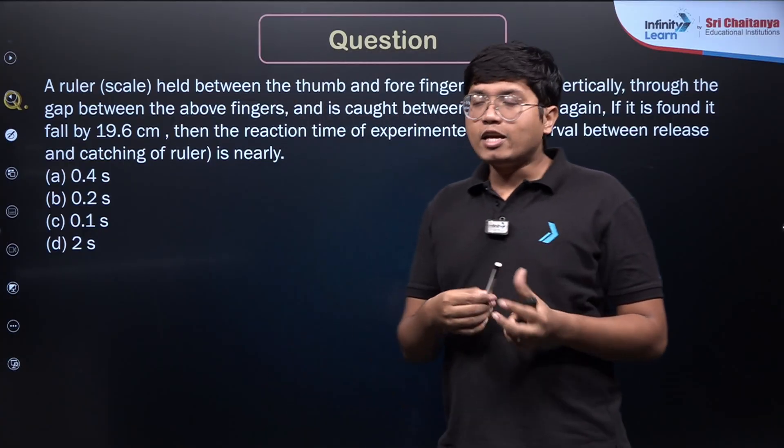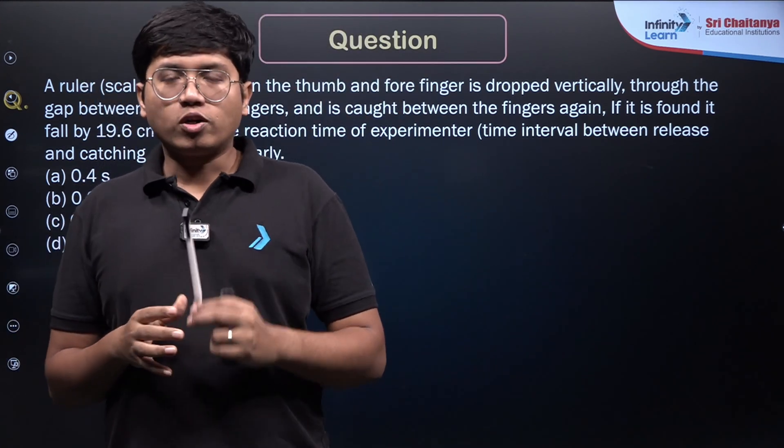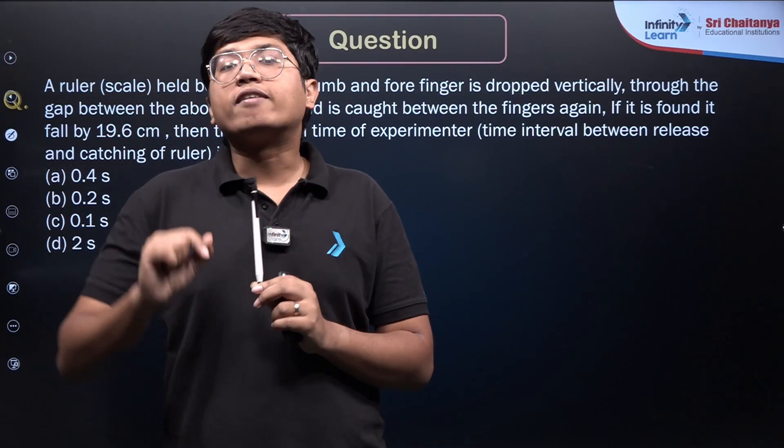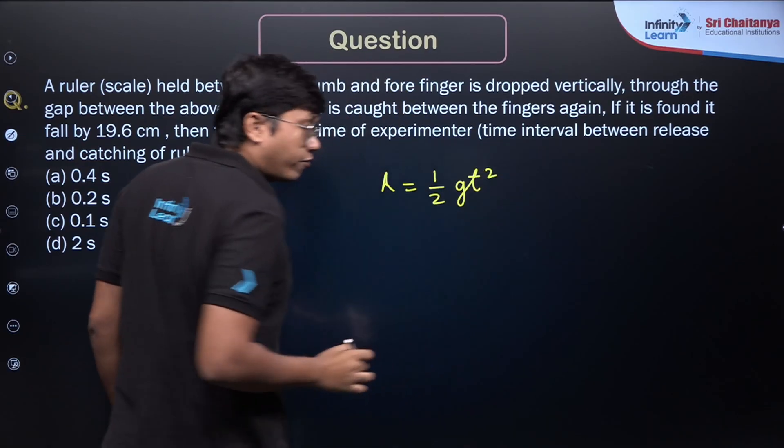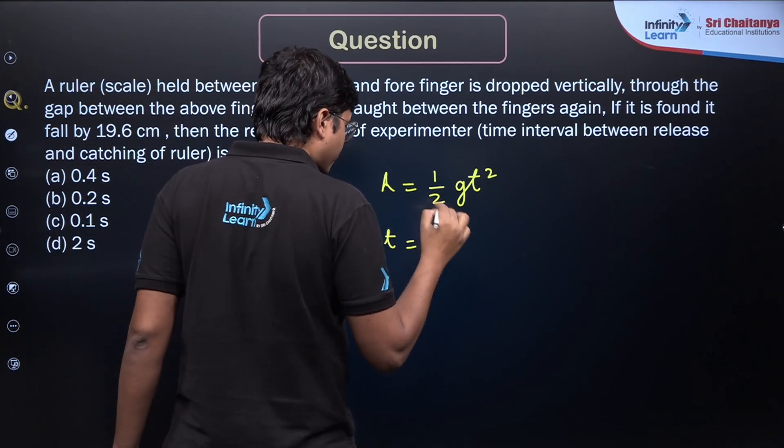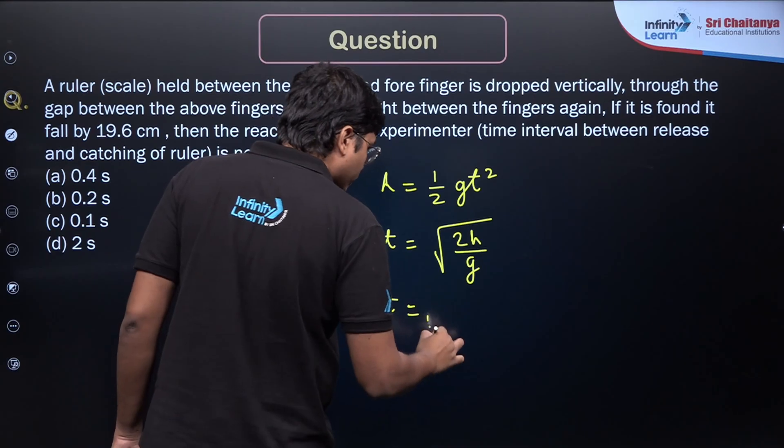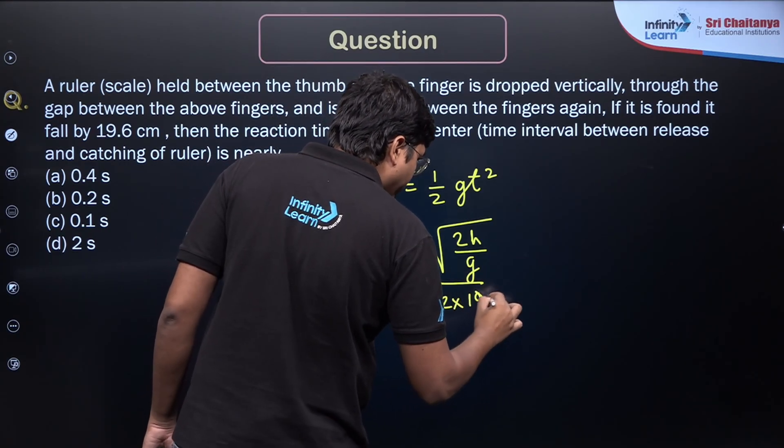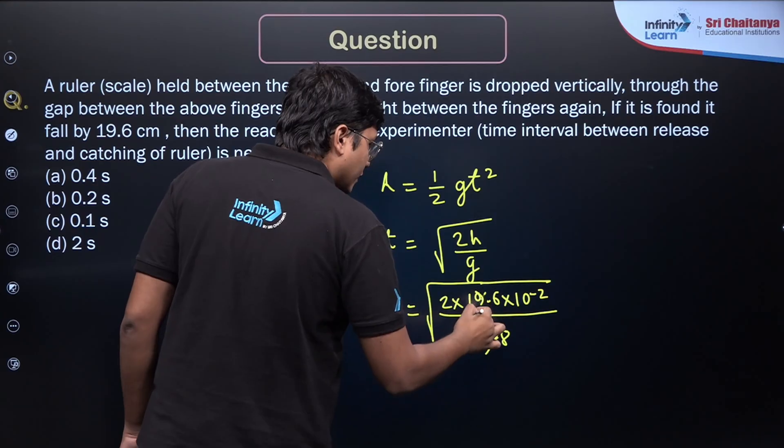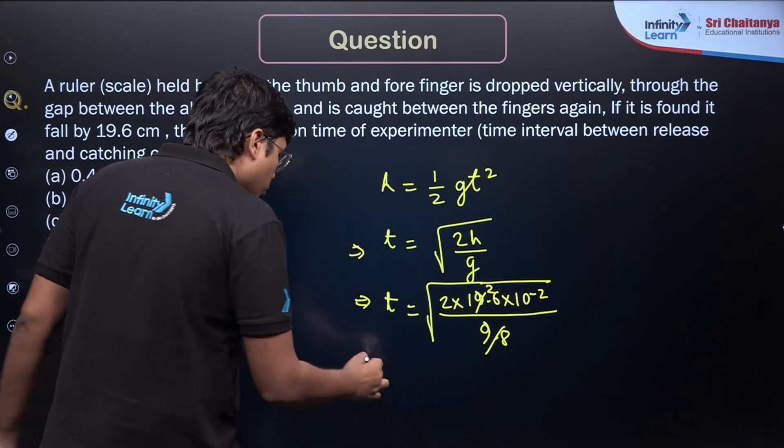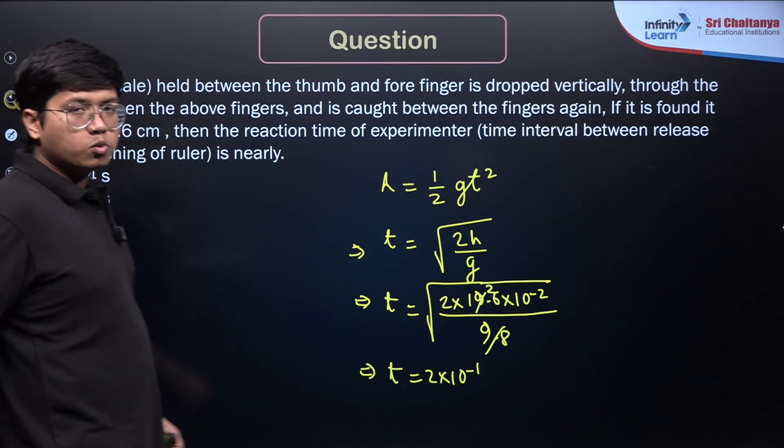So I just need to find in how much time does any object, scale or whatever object, free fall by 19.6 centimeter. That is the time I am looking for, because in free fall it moved 19.6 centimeter before there was the reaction. So there is a normal formula: h equals one-half g t squared for free fall. We are looking for the time. Time is root of 2h over g. Let's plug the values in: 2 into 19.6 centimeter, so there is a 10 to the power minus 2, divided by g is 9.8. This cancels with the 2. So I have 4 into 10 to the power minus 2, which gives me t is equal to 2 into 10 to the power minus 1, which is 0.2 seconds, option B.